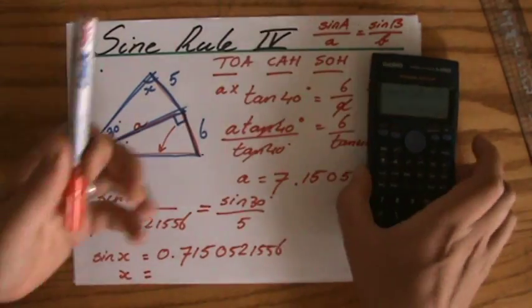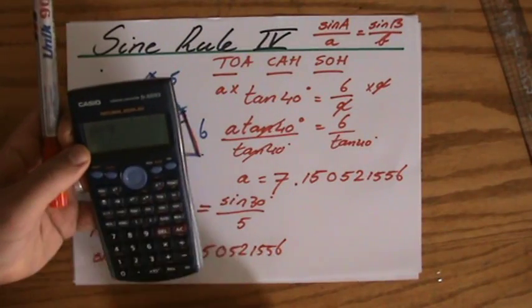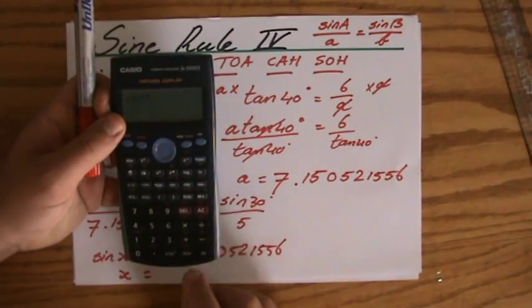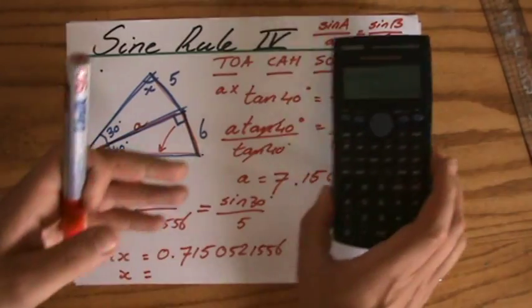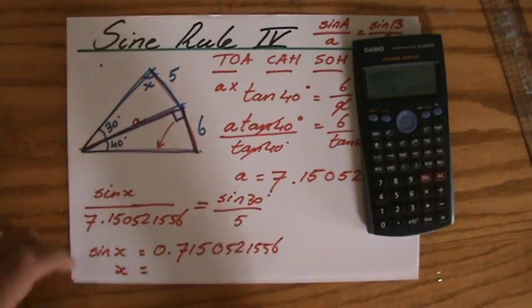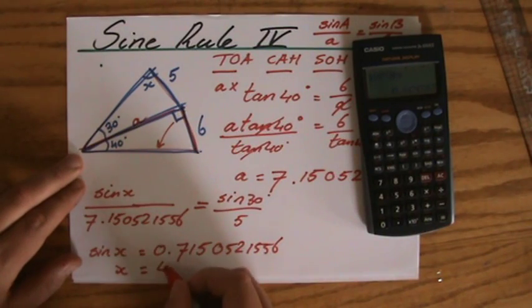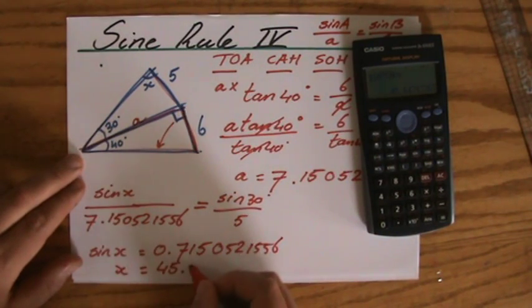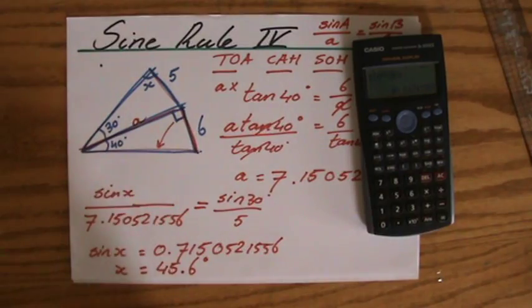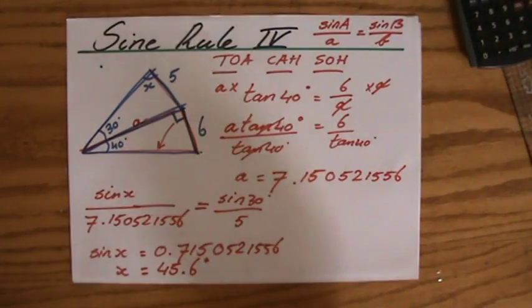So shift sine to the power minus 1, the inverse of that particular answer. And angles we give correct to one decimal place, so 45.6 degrees - that is the size of angle X.